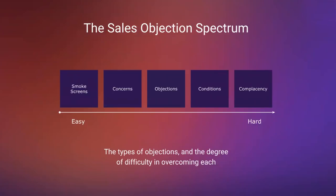Over on the left you have easy objections such as smoke screens, and over on the right you have really hard objections that are not even objections — they're major problems, such as conditions and complacency. We are going to address each one and talk about how you should custom tailor your objection handling methods to each type.